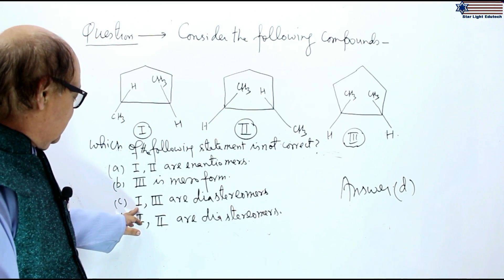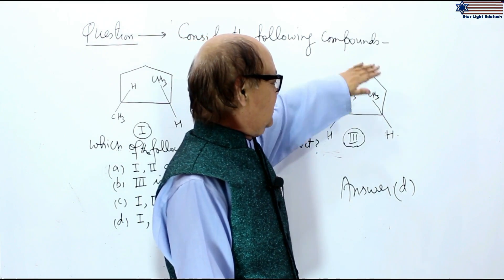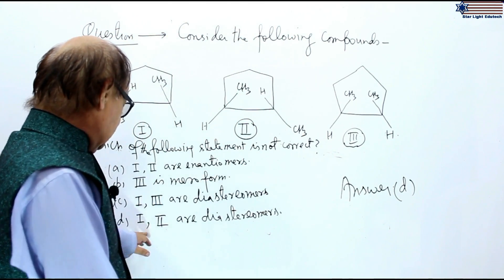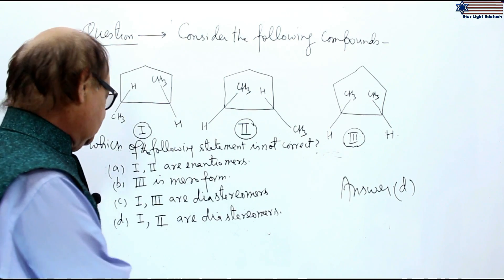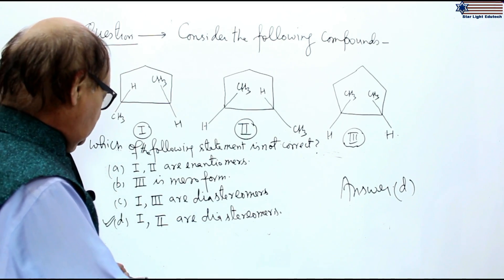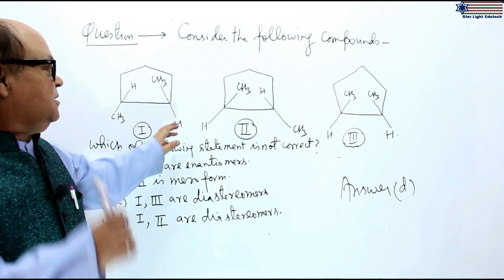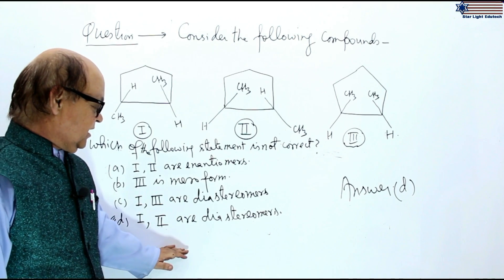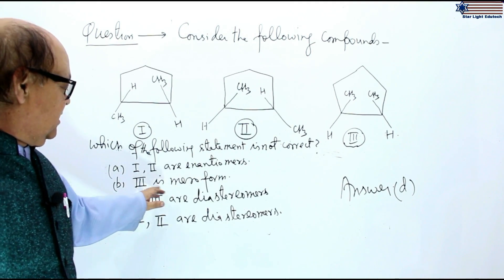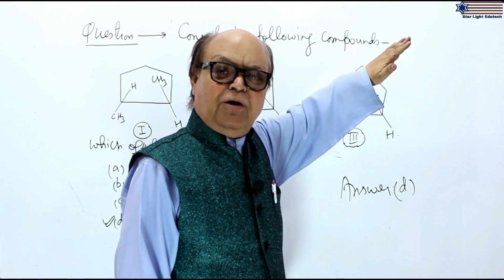Part C: first and third are diastereomers. First is this structure, and third has all the methyl groups at the upper side of the cyclopentene ring, therefore first and third are diastereomers — statement C is correct. Now for statement D: first and second are enantiomers, they are not diastereomers. Therefore the answer will be D — it is not correct. First and second are not diastereomers but they are enantiomers of each other.